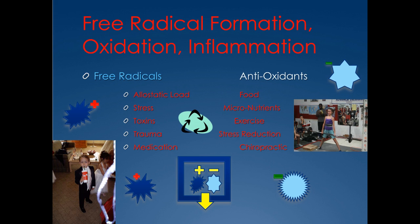Not only are intracellular antioxidants 8,000 times more powerful than micronutrients, but when the vitamin C and vitamin E warriors get worn down in our battle against ill health, the intracellular antioxidants will actually recharge and re-establish them and send them back into the fight. This is a powerful process, and you can't supplement with it — there is no supplement you can take that is glutathione as an intracellular antioxidant. You have to do the right things in the right ways and your body will create them.